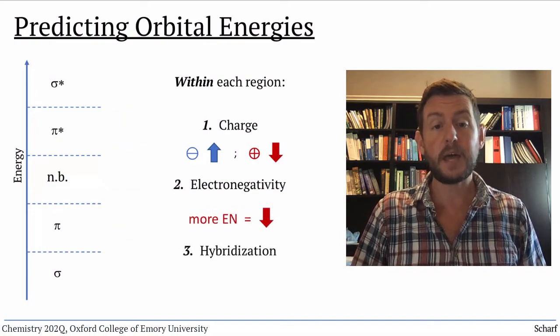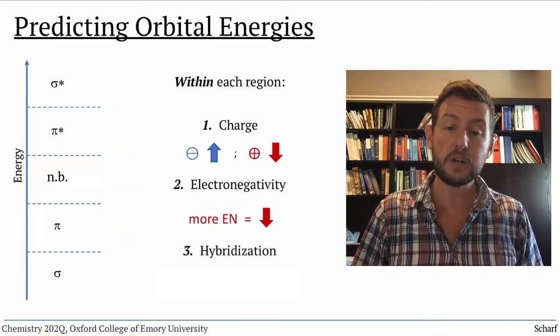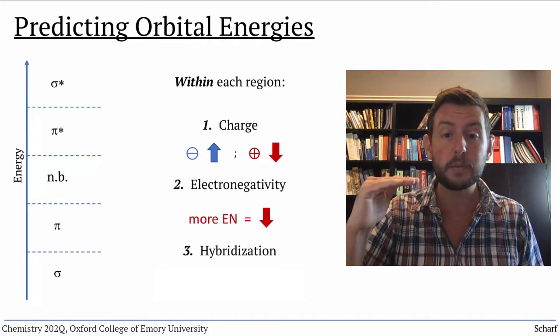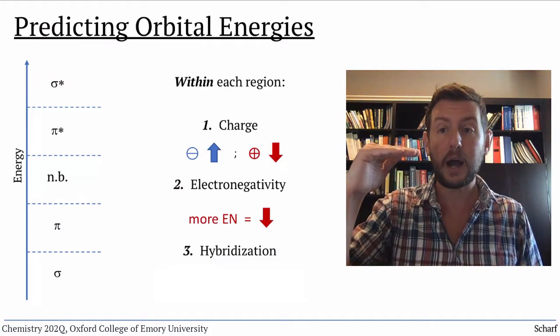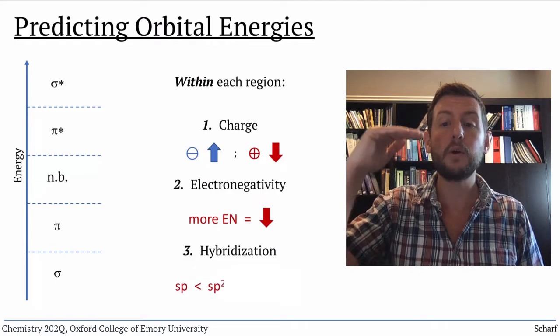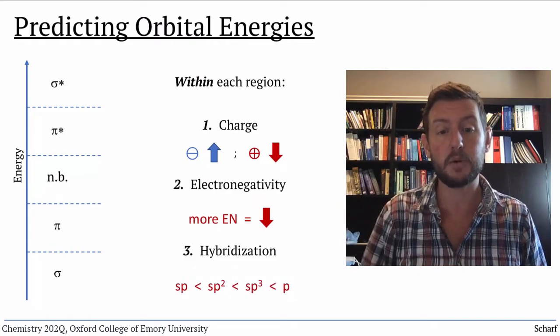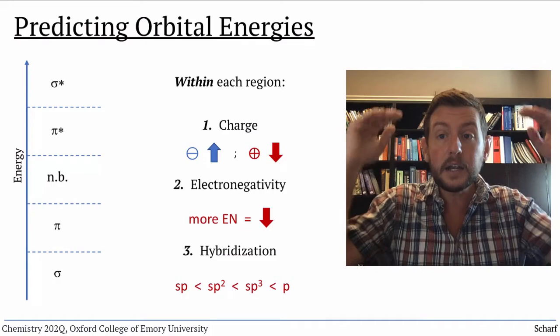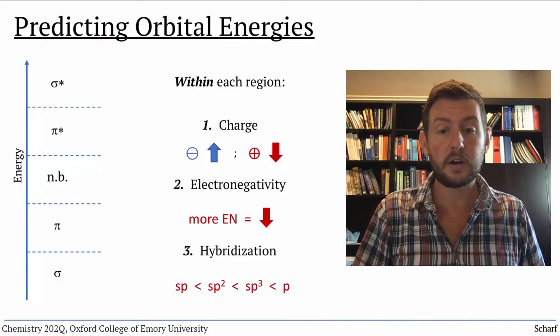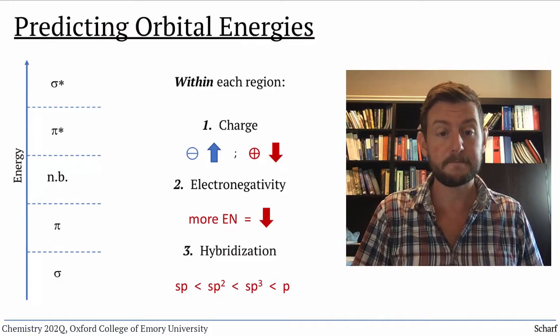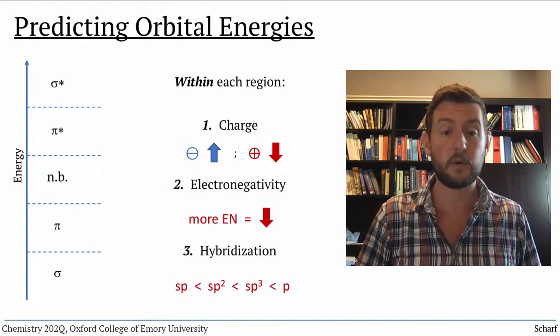The next trend is with hybridization. In general, SP hybrid orbitals are lower in energy than SP2 hybrid orbitals, which are lower in energy than SP3 hybrid orbitals. Unhybridized P orbitals are the highest in energy of all. This is especially useful for non-bonding orbitals.